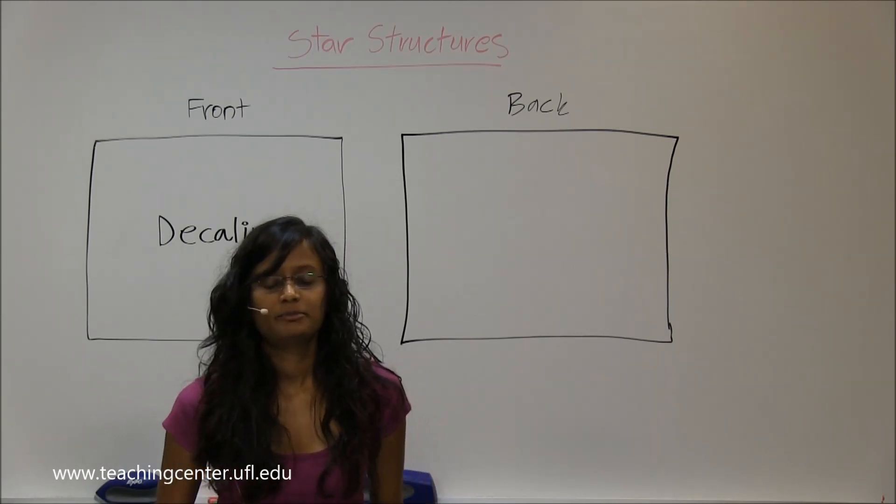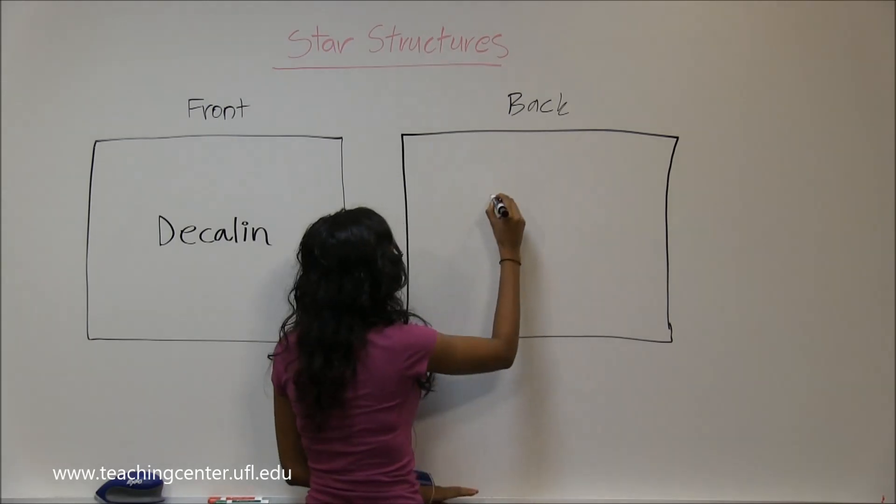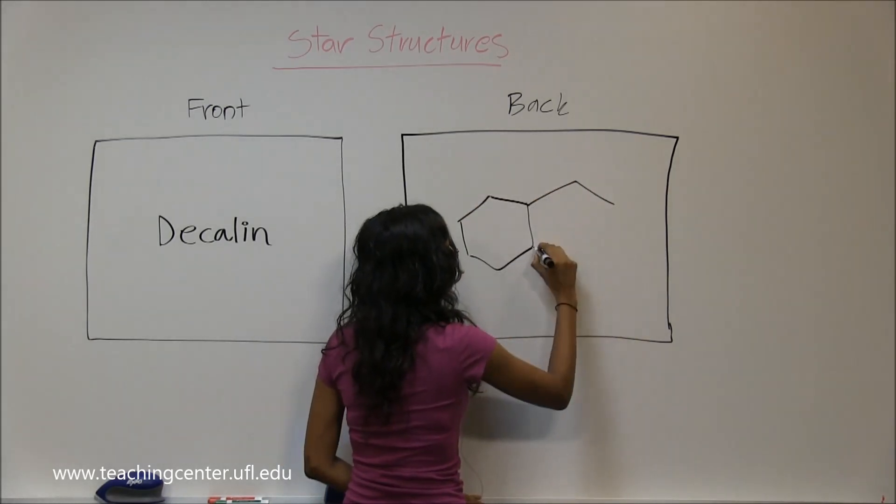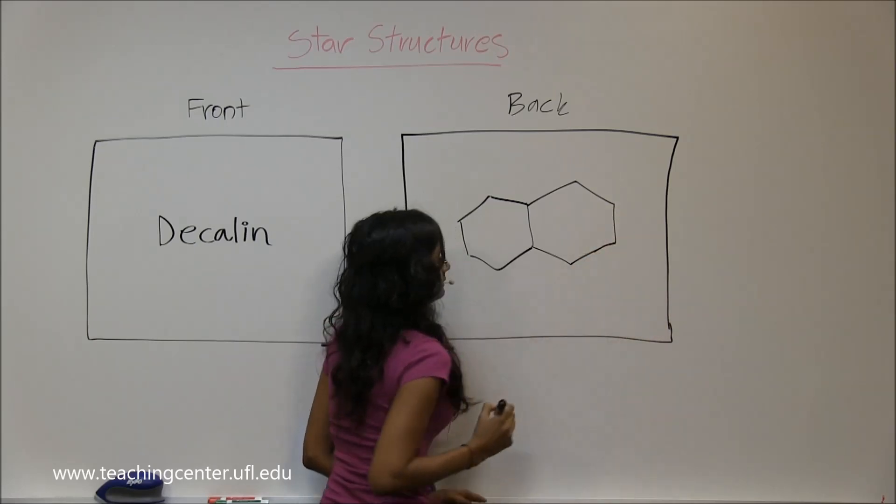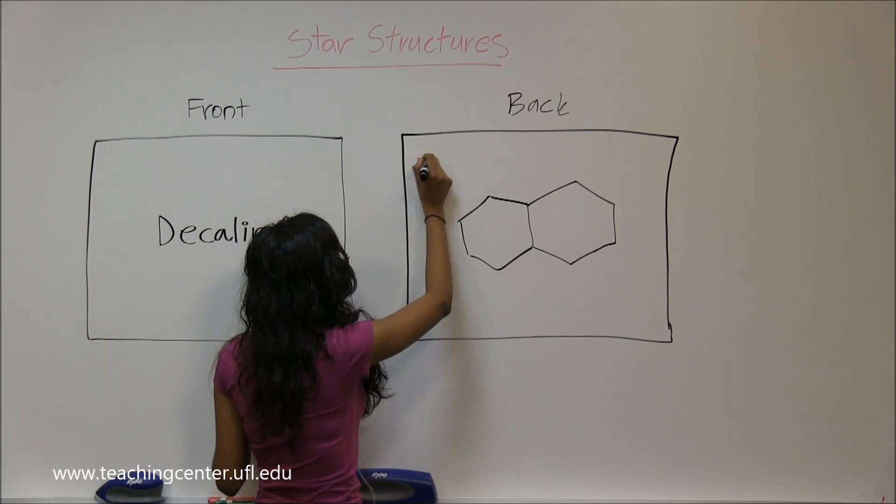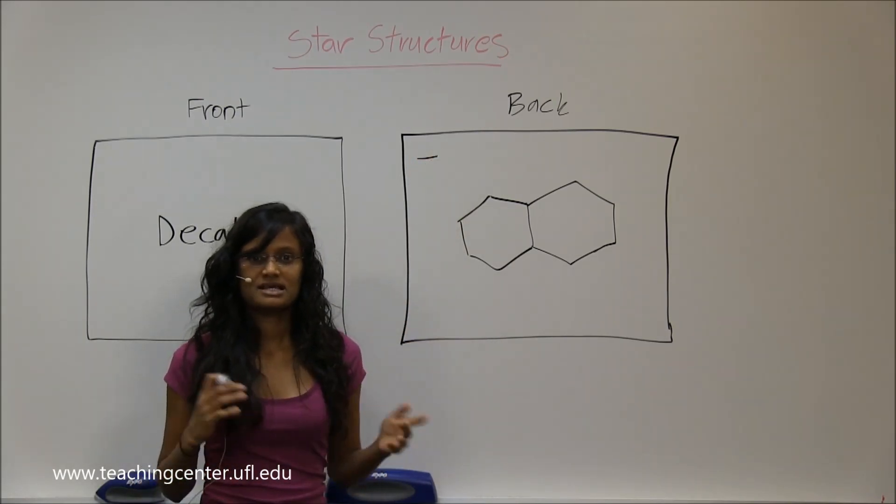Decalin is a bicyclic compound where you have two cyclohexane rings like that. This is a common name. The IUPAC name you don't actually have to learn for the bicyclic naming.